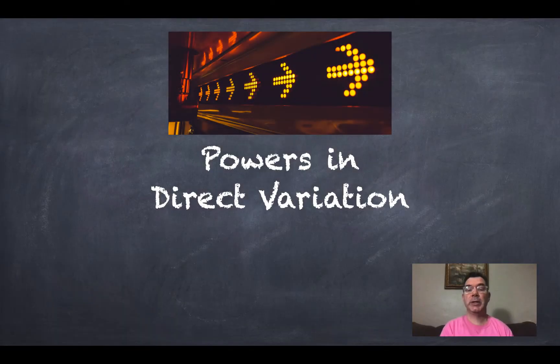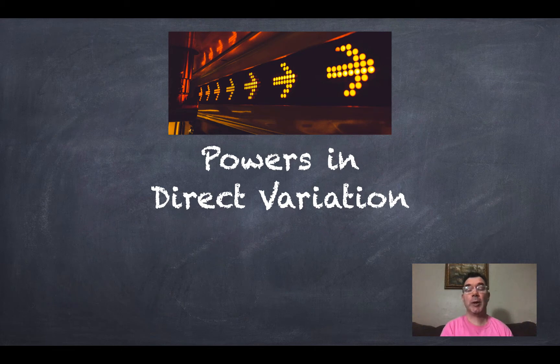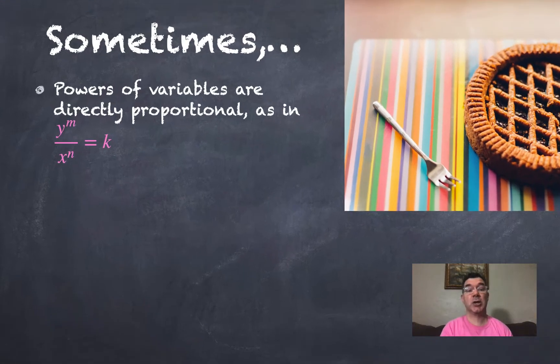Hello again. Today we're going to be building on what we learned previously about direct variation, and we're going to talk about what happens when some of the variables in direct variation have powers or exponents in them. So let's get started.